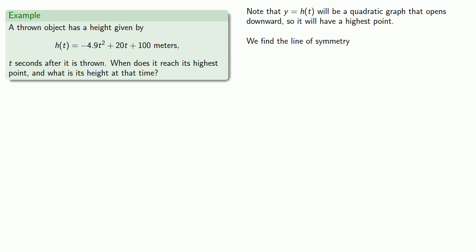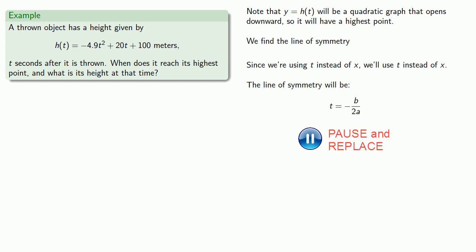There is one minor change: since we are using t instead of x, we will use t instead of x. And so the line of symmetry will be t equals minus b over 2a. So we will substitute in our values for b and a and compute.